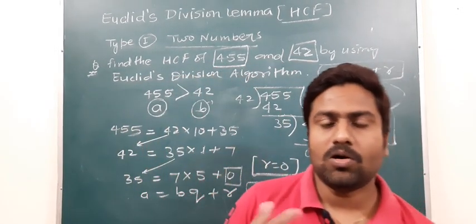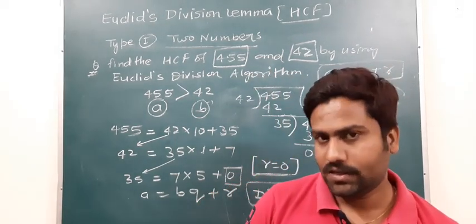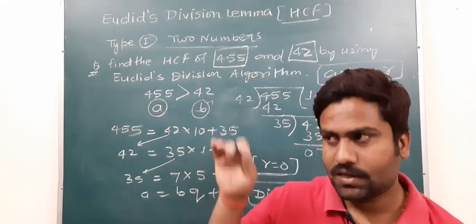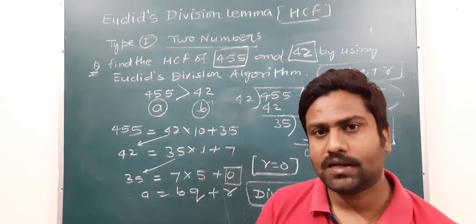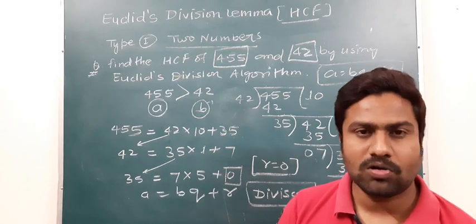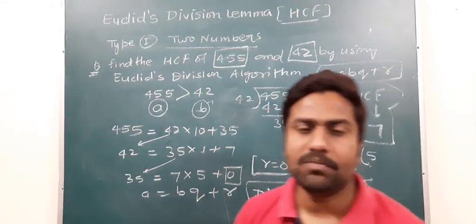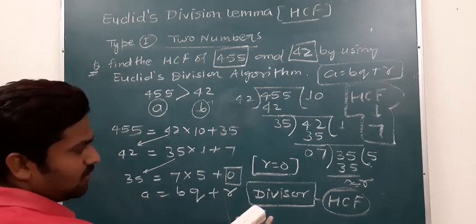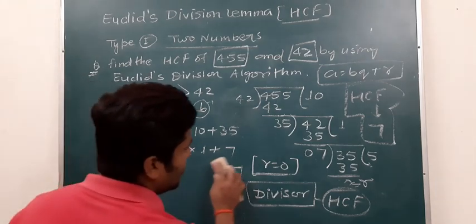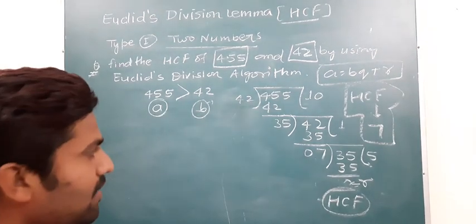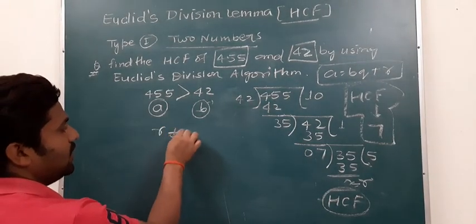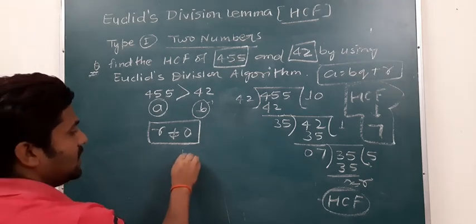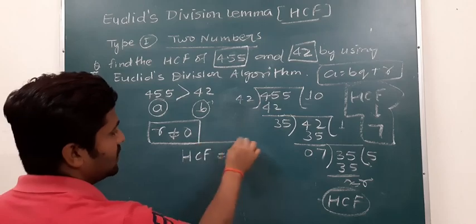A common student question: what if we never get remainder as 0? If you have completed all division steps and remainder 0 is never obtained, then in that case your HCF will be 1. Remember: when you are not getting remainder as 0 after completing all steps, the HCF is 1.